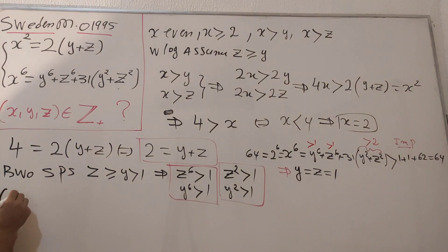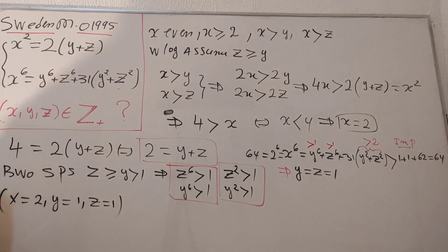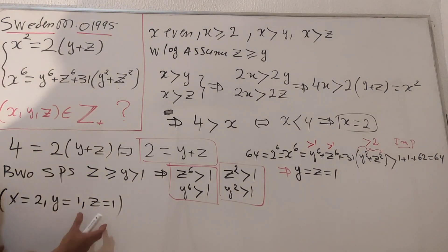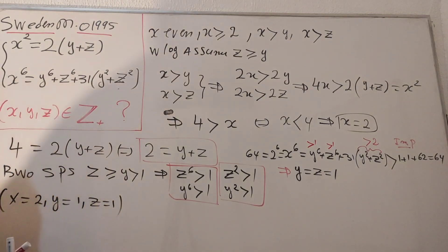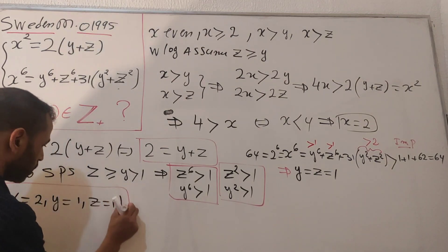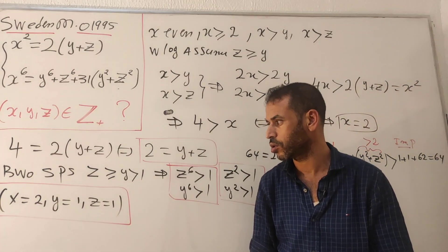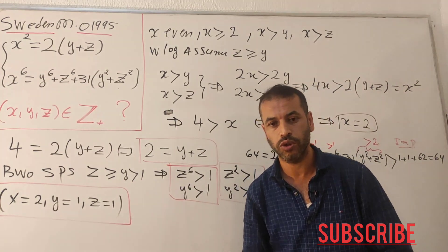So the solution is x = 2, y = 1, z = 1. Due to the symmetry between y and z they are equal to each other, so we end up with only one pair of solutions. Thanks for watching — don't forget to hit the subscribe button and support the channel. See you in the next video!